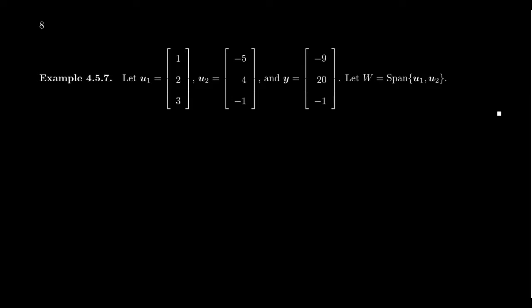Let's look at an example of such a thing. Let's take two vectors u1 and u2 to be [1, 2, 3] and [-4, -5, 4, -1]. Notice real quick that if I take the dot product of u1 and u2, you end up with negative 5 plus 8 minus 3, which is equal to zero. So those are perpendicular with each other.